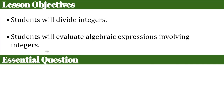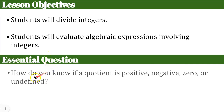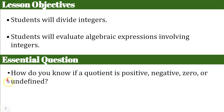Our question today — what I want you thinking about as I proceed through the lesson — is: how do you know if a quotient is positive, negative, zero, or undefined? Unlike the multiplying lesson, we have added a fourth possible quotient.